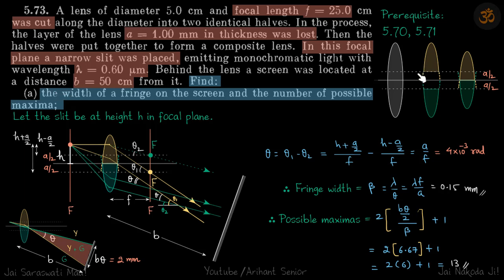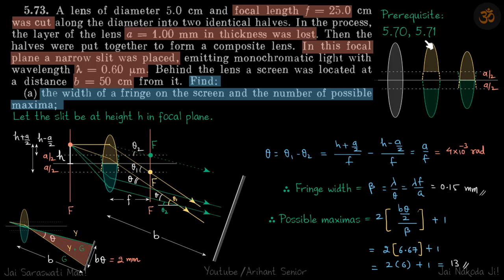We have a lens which is cut in the center and joined together. On the focal plane of this combined lens is placed a slit with a given wavelength lambda behind it, and we have a screen at a given distance from the lens. We need to find the width of a fringe on the screen and the number of possible maxima. Prerequisites for this problem are 5.70 and 5.71 where certain concepts are explained.